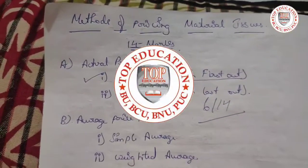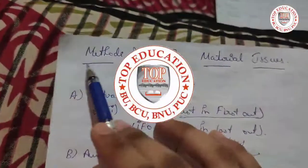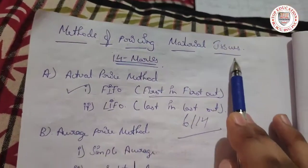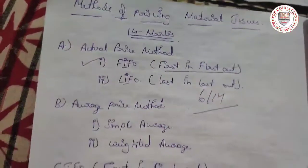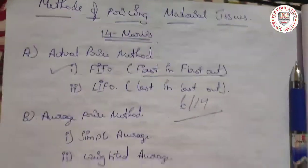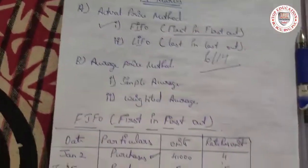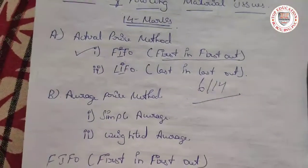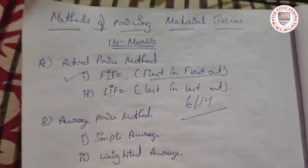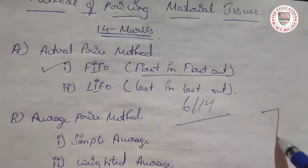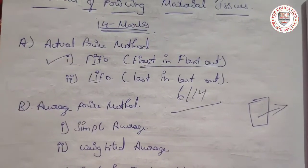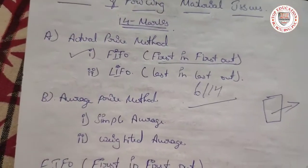Hi dear friends, welcome to Top Education. In this session we are doing methods of pricing material issues. This is related to how we maintain closing stock, and what is inflow and outflow of purchases and sales. It is only related to cost accounting — what we have manufactured and what we have sent for sale.